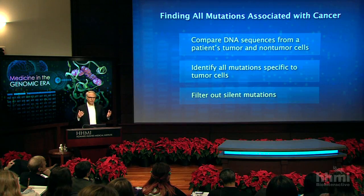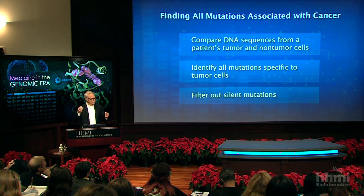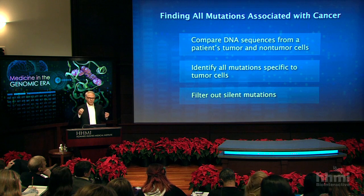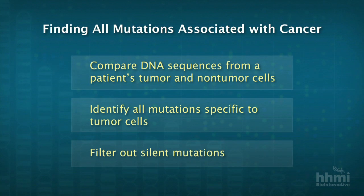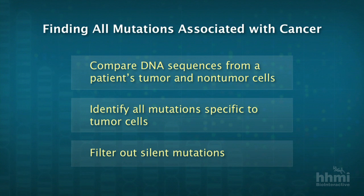The idea is to sequence the DNA from a patient with cancer — sequence the tumor DNA as well as the non-tumor DNA — to identify all the mutations that are found only in the tumor DNA and not in the patient's matching normal DNA, and then to filter out the silent mutations and see what's left.